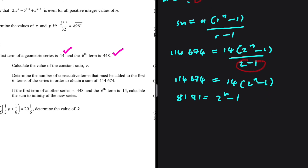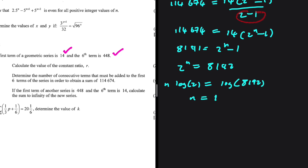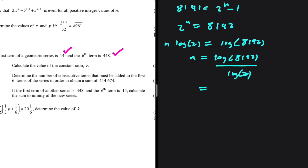Taking the minus 1 to the left-hand side, we get 2 to the power of N equals 8,192. Taking log on both sides: N log 2 equals log 8,192, so N equals log(8,192) divided by log(2), which gives 13. We need 13 terms for that sum. So the number of consecutive terms to add to the first 6 is 13 minus 6, which equals 7.